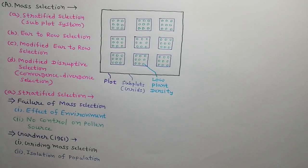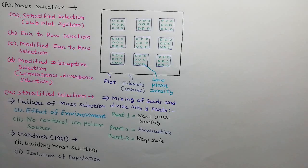As shown in the diagram, there are nine subplots or grids in a plot. In each subplot, plant density is low. From each subplot, equal number of plants are selected. Mix up the seeds of all the selected plants and divide into three parts. Seeds of first part are used to grow next year in isolation. Seeds of second part are used to grow for evaluation. And seeds of third part are kept safe for future use.